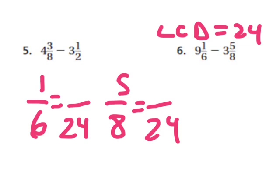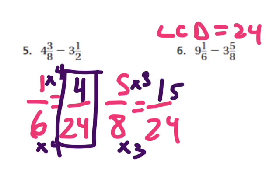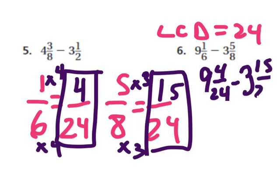Six times four is twenty-four. Since I multiply the bottom by four, I have to multiply the top by four, and I get four over twenty-four — that's my first fraction. And eight times three is twenty-four, so I multiply the top times three and get fifteen twenty-fourths — that's my second fraction. So now I have nine and four twenty-fourths minus three and fifteen twenty-fourths.